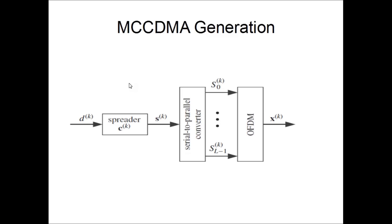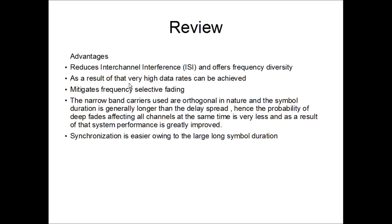This is how the MC-CDMA signal is generated. Assuming a data train coming from the transmitter, it is spread over the spectrum using codes, and the serial train is then converted to parallel using a serial-to-parallel converter. This parallel data is then modulated on L sub-carriers of the OFDM transmitter. Each parallel-split data stream is sent over a different sub-carrier present in the OFDM system. As a result, this yields large advantages including reduction of inter-channel interference and offering of frequency diversity.